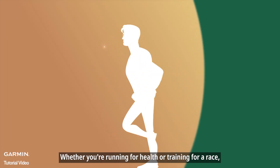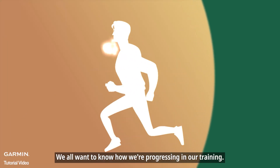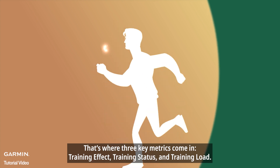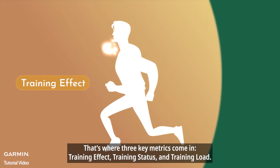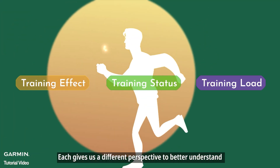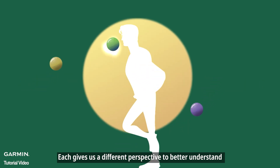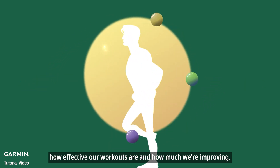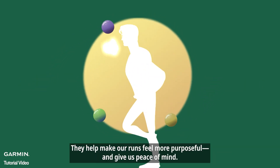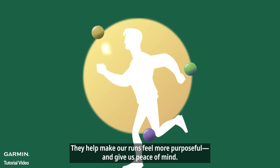Whether you're running for health or training for a race, we all want to know how we're progressing. That's where three key metrics come in: training effect, training status, and training load. Each gives us a different perspective to better understand how effective our workouts are and how much we're improving. They help make our runs feel more purposeful and give us peace of mind.